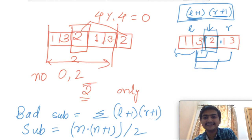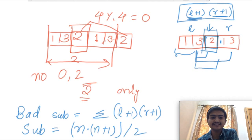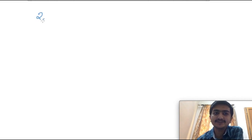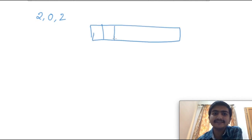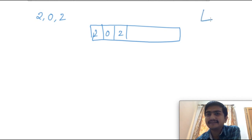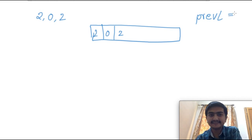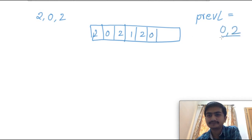Now let me explain the sliding window approach to get the maximum window length. We will use a sliding window to generate the maximum-length subsequences not containing a 0 or 2. This can be done in O(n). We maintain a pointer called previous_L, initialized to minus 1, which tracks the last position where we encountered a 0 or 2.